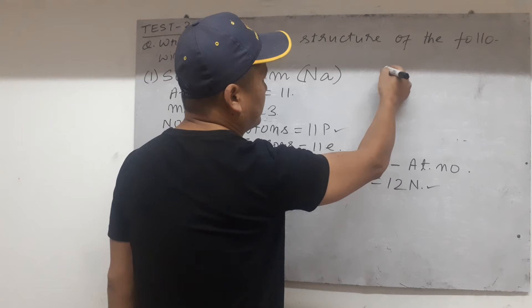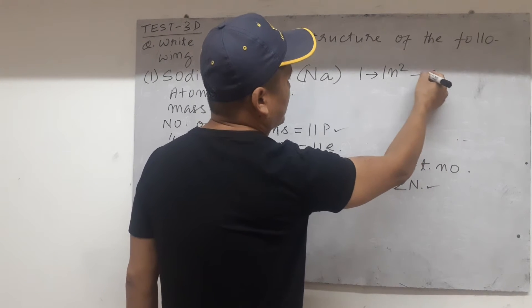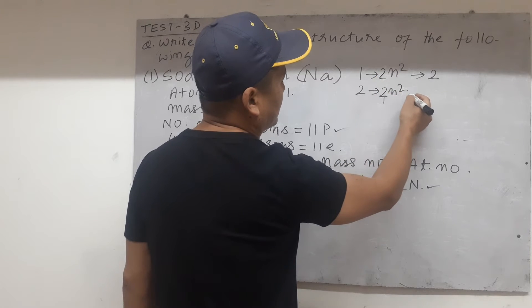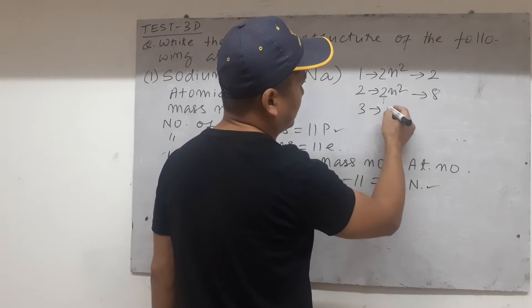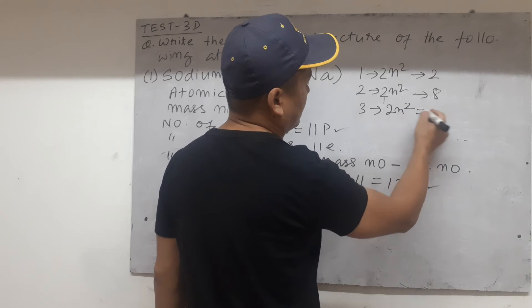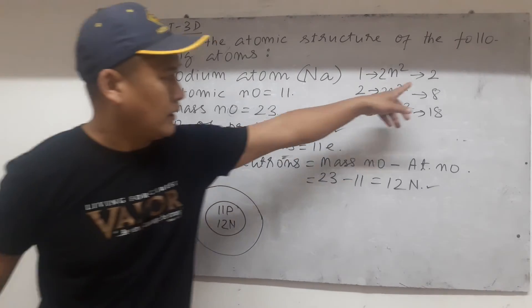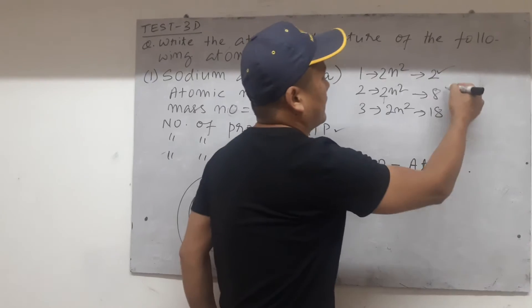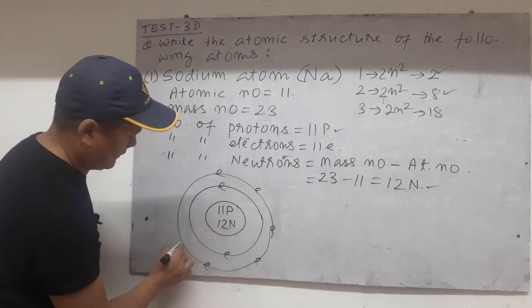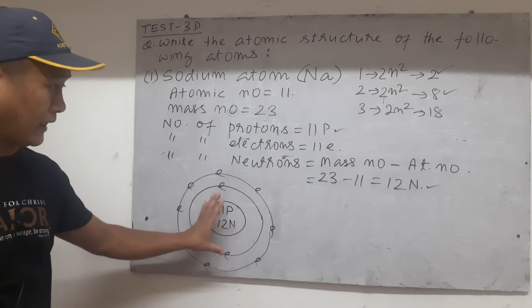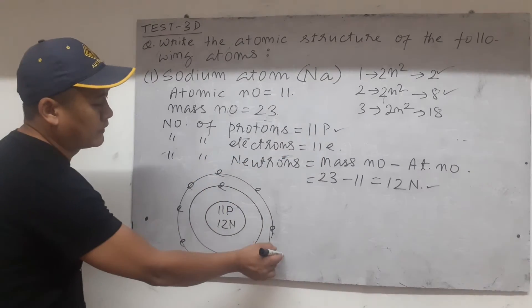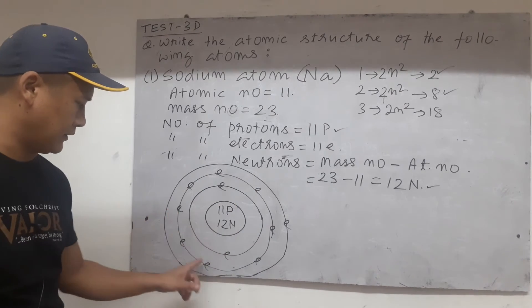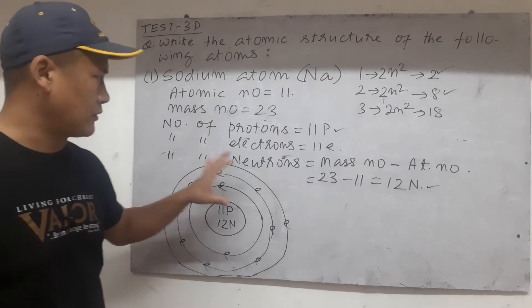According to Bohr's rule, the first shell has got two electrons maximum. Second shell has got, by using the 2n² formula, 8 electrons. Third shell has got maximum 18 electrons and so on. So here, sodium has 11 electrons. The first shell has 2, second shell has 8 — so 2 plus 8 is 10. But there are 11 electrons, so that one electron left we have to put in the third orbit. So 2 in the first shell, 8 in the second shell, and 1 in the third shell. This is the structure of sodium atom.